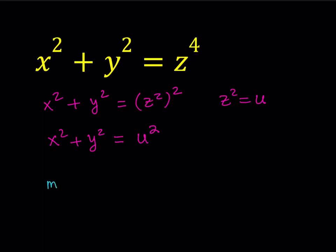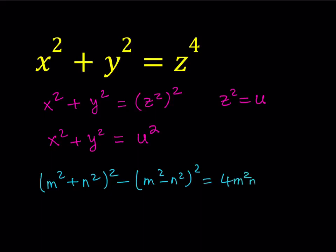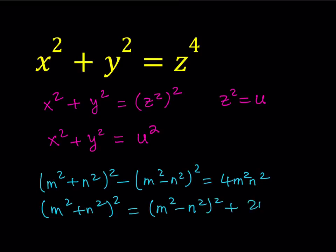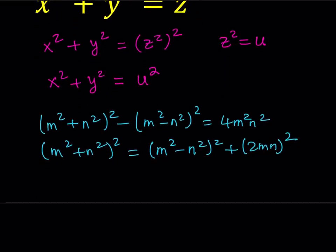Especially in geometry puzzles, we use this identity. If you take m squared plus n squared, square it, and from that subtract m squared minus n squared, squared — this looks like (a+b)² minus (a-b)², which always equals 4ab — so this is going to be 4m squared n squared. If you isolate m squared plus n squared, squared, you basically get: the quantity m squared minus n squared, squared, plus the square of 2mn equals m squared plus n squared, squared. This shows that we found triples that satisfy the Pythagorean theorem.